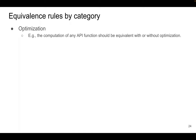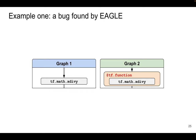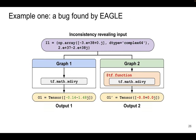The first category is called optimization. It contains one rule stating that the computation of any API function should be equivalent with or without optimization given the same input. Here is a pair of concrete equivalent graphs where the API is concretized to TensorFlow's x_div_y and the optimization method is tf.function. We detect a new bug using this pair of equivalent graphs: when feeding the generated input, we detect inconsistencies, confirmed as a bug by TensorFlow developers. The bug occurs in tf.function mode when inputs are large and the computation overflows, while it doesn't overflow in normal mode.